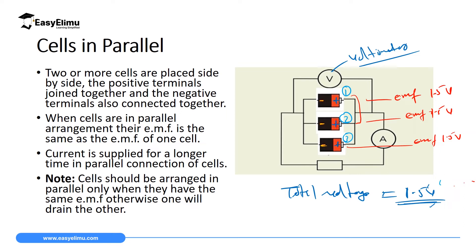So the current which is supplied in this arrangement will last for a longer time. For example, if cells in series take one hour to be depleted, then for cells in parallel, if they are three, they will take three hours. So here it will supply current for a very long time. However, it is important to note that for you to arrange cells in parallel arrangement, the cells must have the same EMF — you must make sure that all of them have the same EMF.